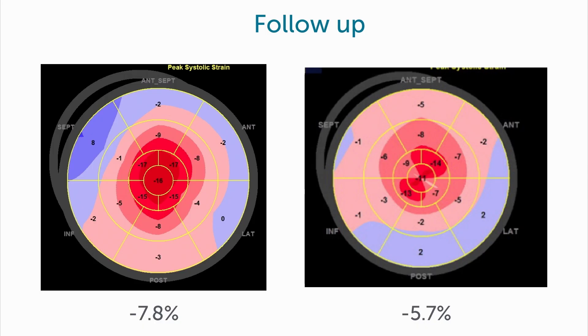Let me just demonstrate here on one patient how we can follow up this patient, who started out with a global longitudinal strain of minus 7.8. You can nicely see the further deterioration of longitudinal function after follow-up. This is something you cannot do as well with ejection fraction, because ejection fraction has a higher variability and strain values are more sensitive to smaller changes — a wonderful way of detecting progression of the disease.